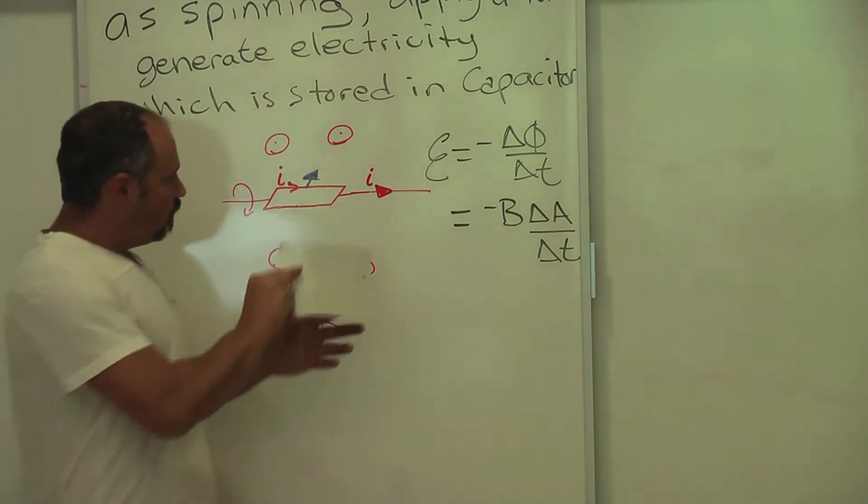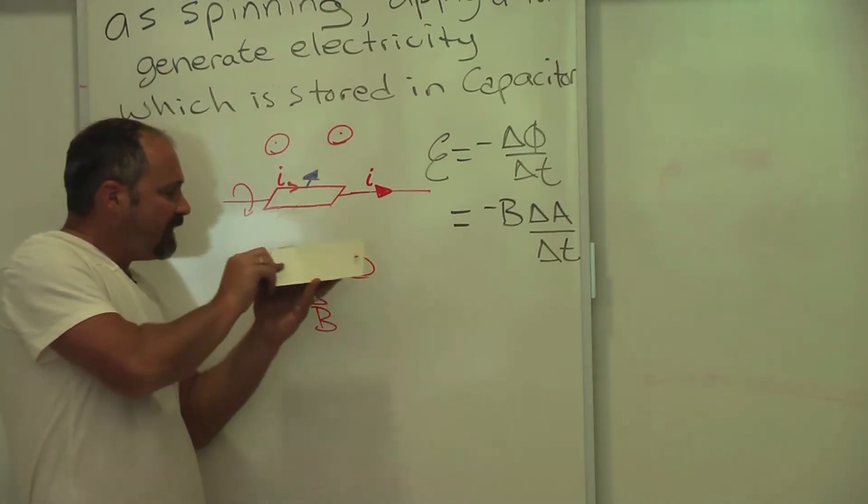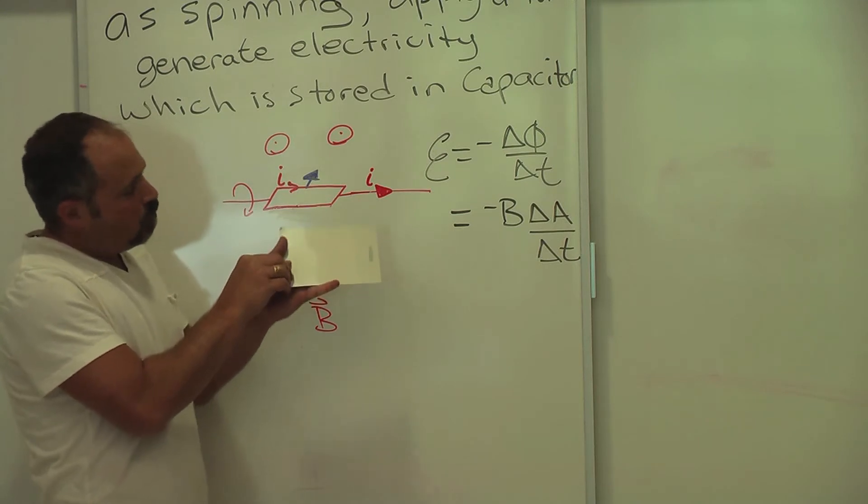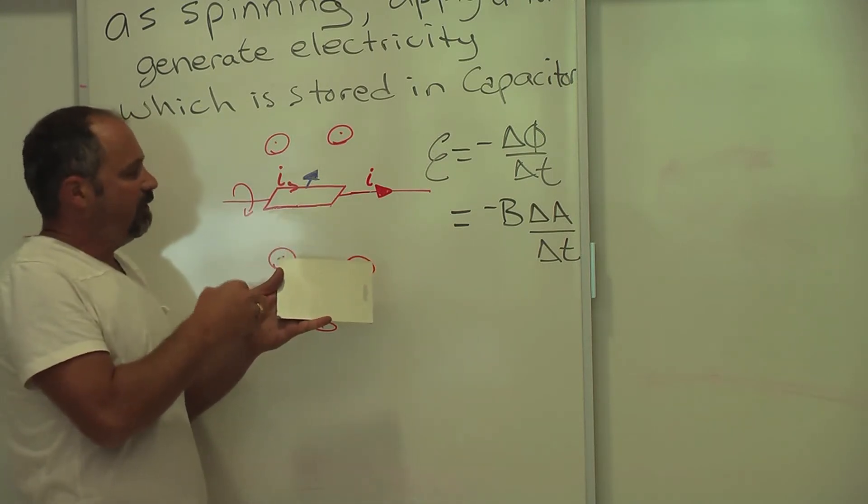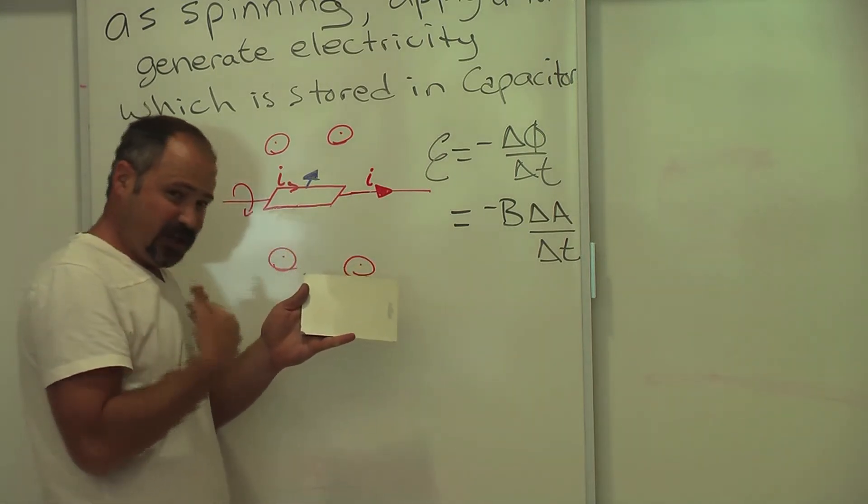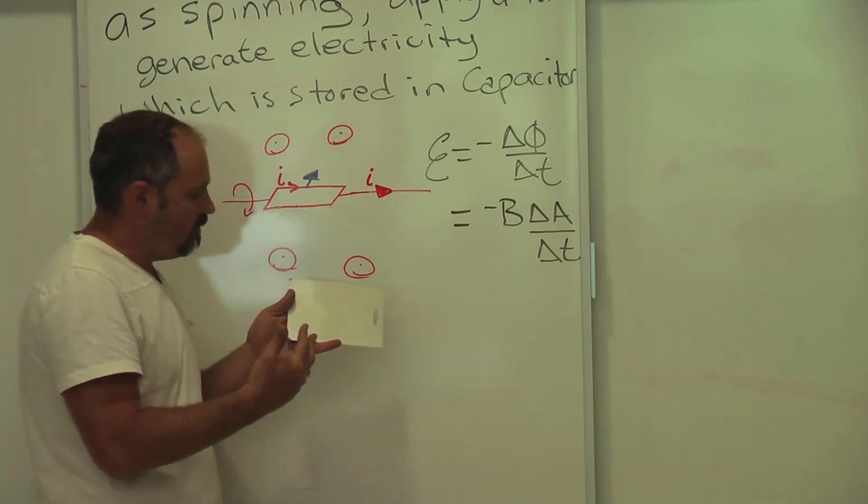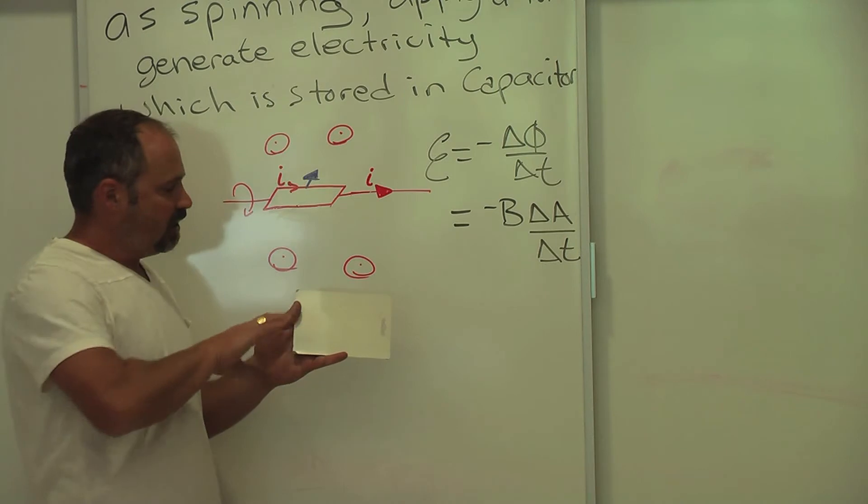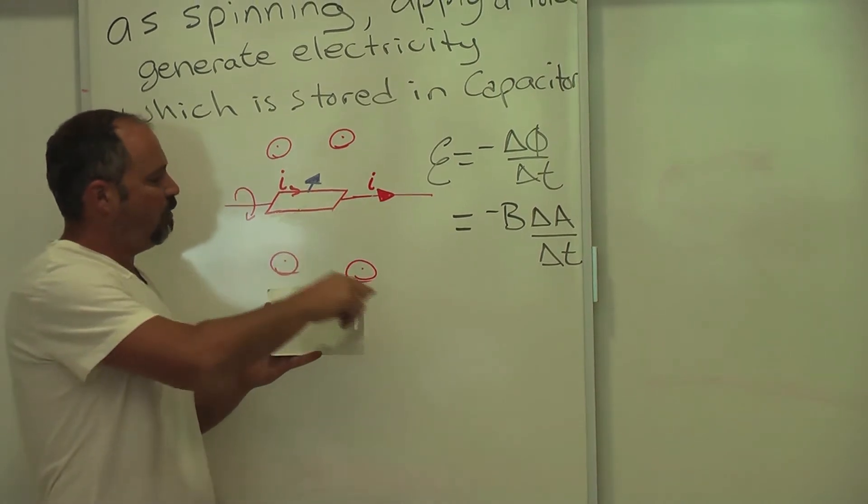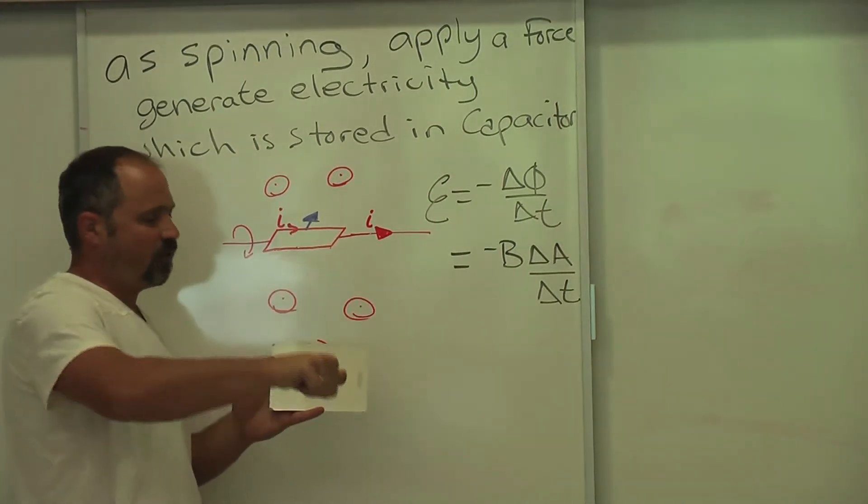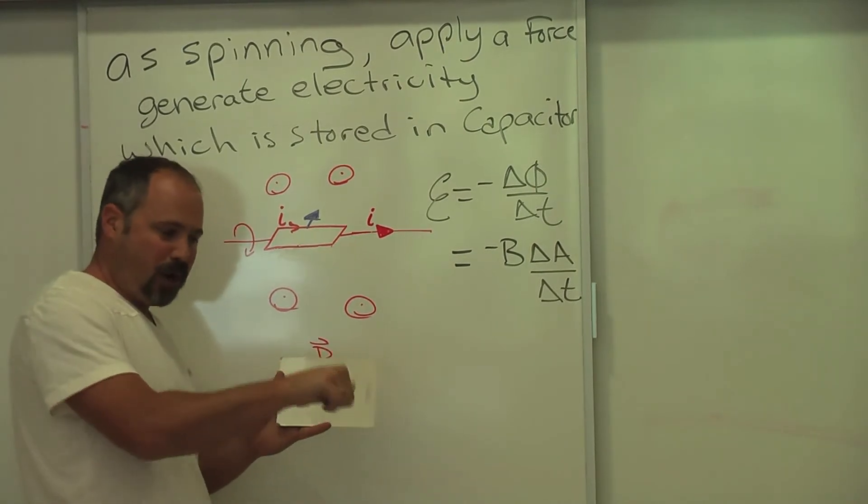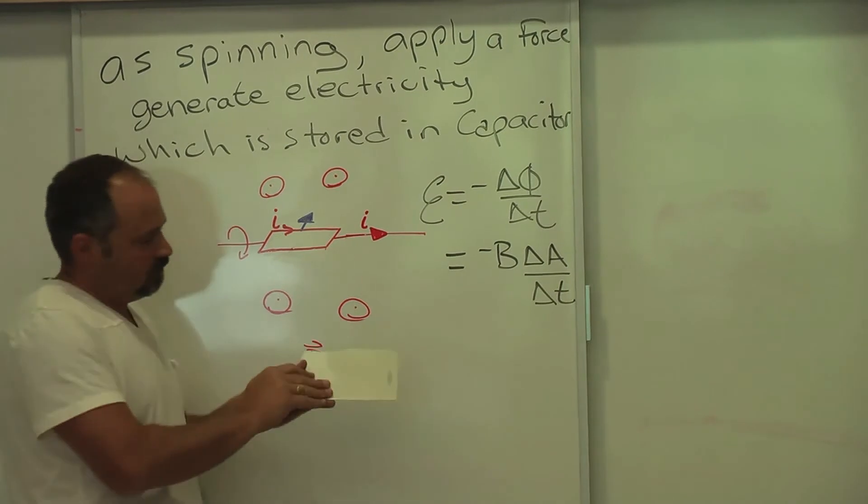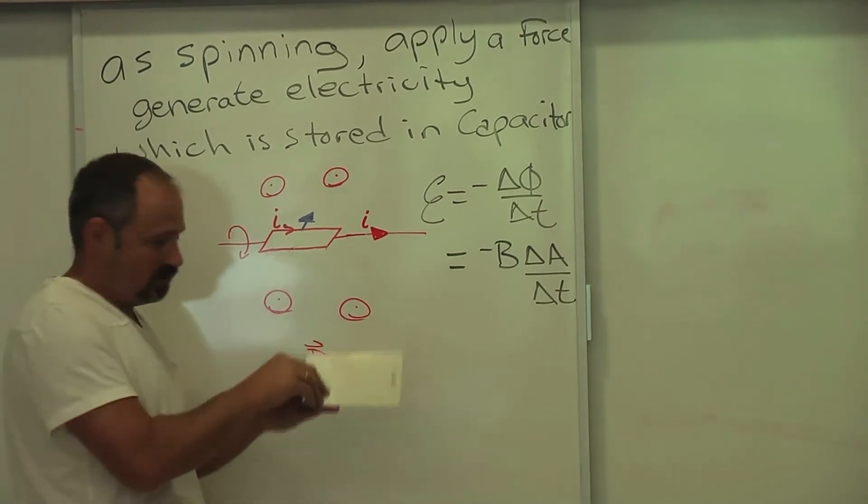Good. So now, check this out. As this coil comes up and faces the magnetic field more and more, well, the flux is increasing, and therefore, with Lenz's law, what's going to happen is electricity is going to flow like this to generate an opposing magnetic field, which opposes the increasing magnetic field this way. So increasing because the flux is increasing.